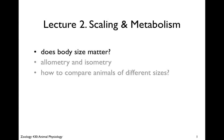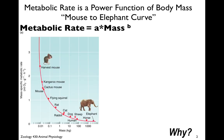Welcome to Animal Physiology at UH. Today we're going to have a short lecture on scaling and metabolism. In class we learned about the famous mouse-to-elephant curve, which is Kleiber's Law, and it describes the change in metabolic rate as animals change in size. Metabolic rate is a power function of body mass, and it's an incredibly tight relationship between mass and metabolic rate.